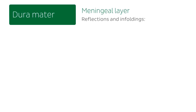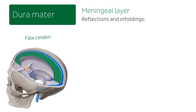The inner meningeal layer of the dura mater forms reflections and infoldings, the first of which is the falx cerebri, highlighted here in green. This is a sickle-shaped part of the dura mater that projects downward into the longitudinal cerebral fissure, separating the two cerebral hemispheres.